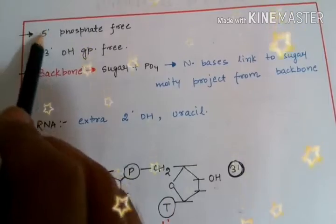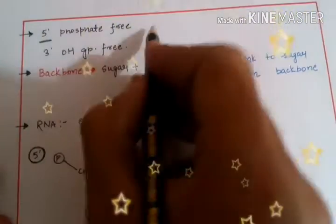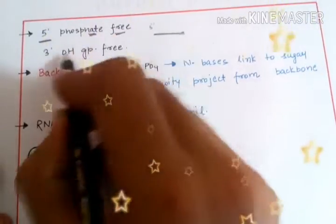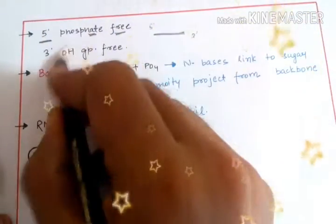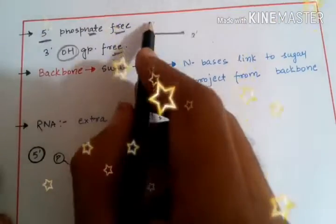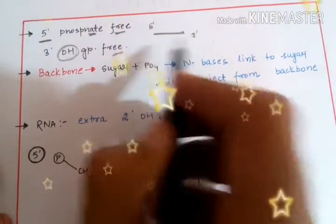Since we have talked about it, the 5' end which is at the end will contain a phosphate group which is free and the 3' end will contain an OH group which is also free. So there are two ends: 5' and 3'.